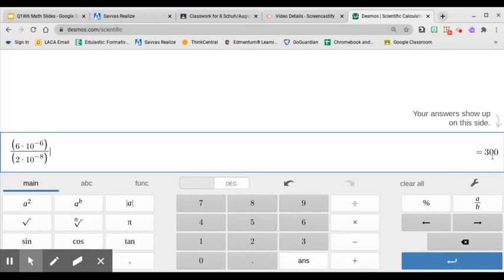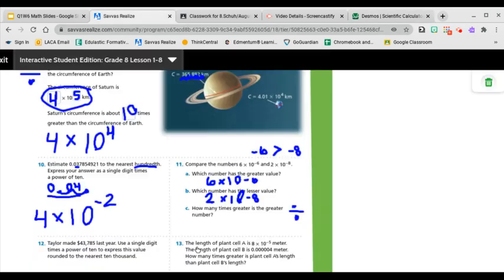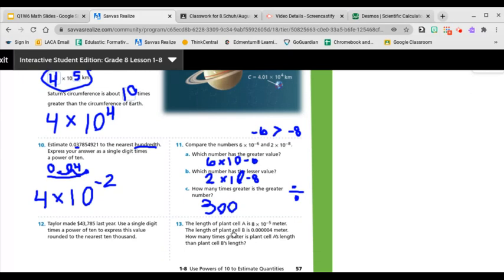And then it tells you over here that it's 300. It is 300 times greater. So then the answer here is 300 times greater. Okay. I'm going to let this video run out, so we'll watch the next part with the next.